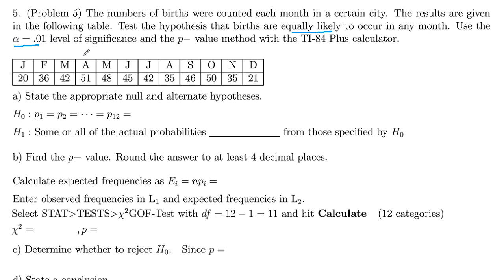We're going to use alpha equals 0.01 significance level and the p-value method with the TI-84 Plus calculator. First, we want to set up the null and alternative hypothesis.